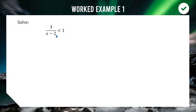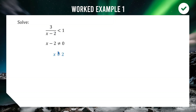We start by noting that x cannot equal 2, because dividing by zero is undefined. So x = 2 is our first critical value. You always get the first critical value by setting the denominator equal to zero and finding what x cannot be.